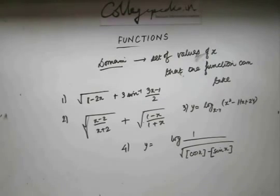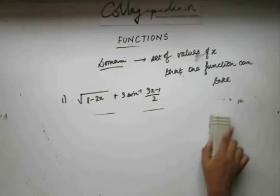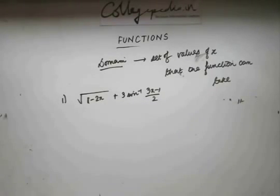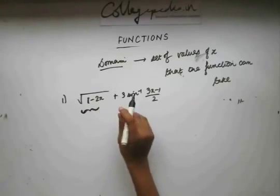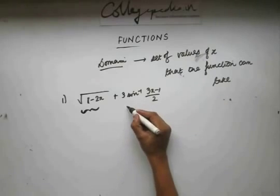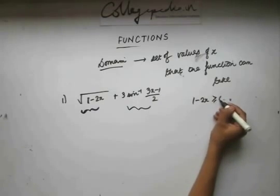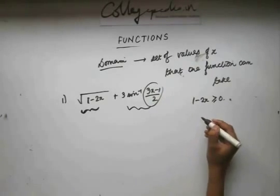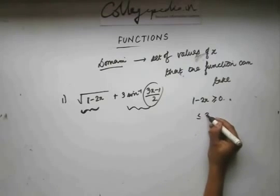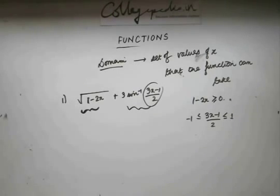Let's start with the first question. To find the domain of this problem, first we need to see what restriction we have on the square root function and what restriction we have on the sine inverse function. The square root function has to be greater than or equal to 0, and the argument of the sine inverse function should lie between minus 1 to 1. These are the two conditions that need to be satisfied.